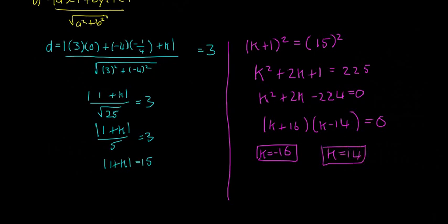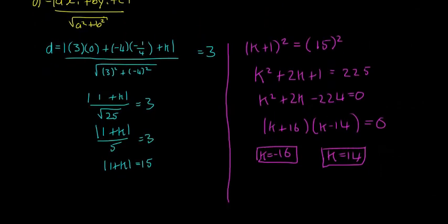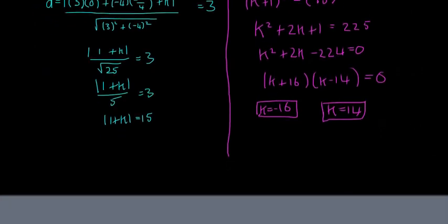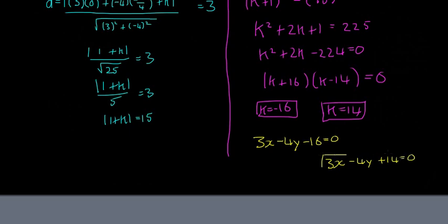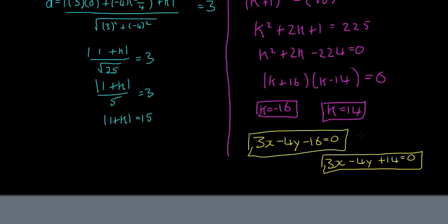That's almost the question done. We just need to write out the final equations: 3x minus 4y minus 16 equals 0, or 3x minus 4y plus 14 equals 0. Big box around each of those — and there are our answers.